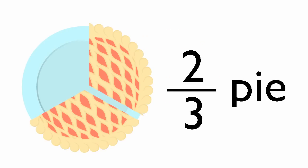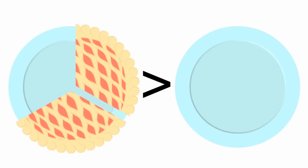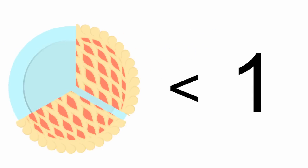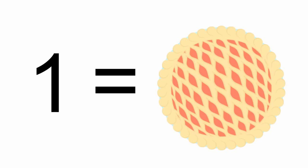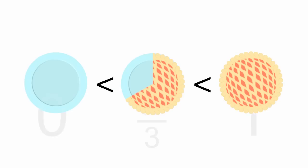How much is two-thirds of a pie? It's more than 0. 0 means nothing. No pie at all. So we definitely have more than that. It's also less than 1. 1 means a full pie. We don't have that much. We have an amount that's in between 0 and 1.